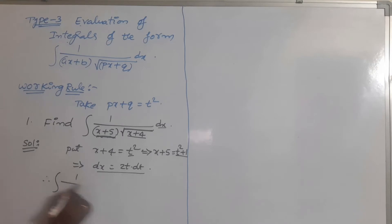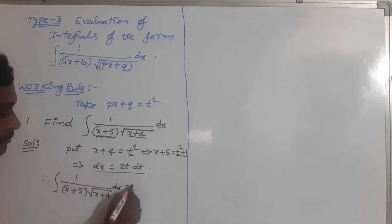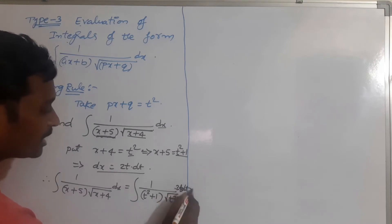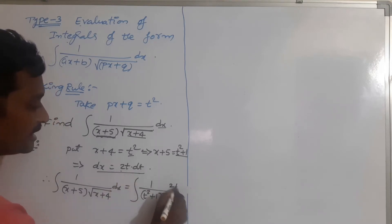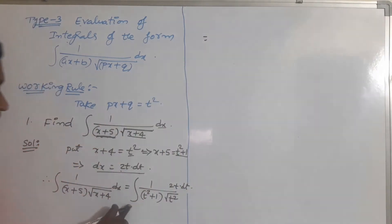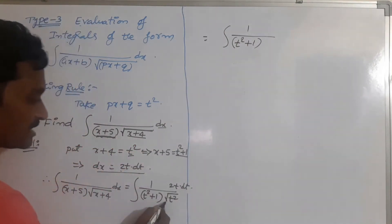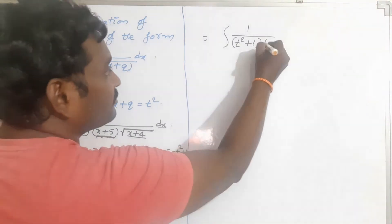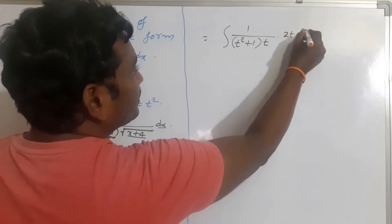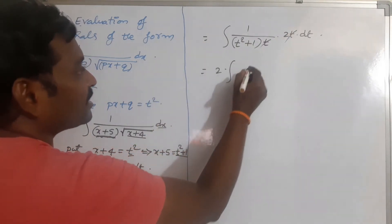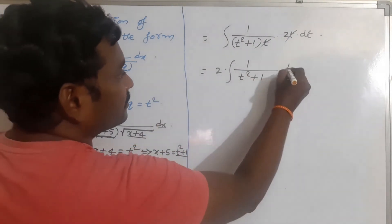The given problem becomes: integration of 1 by (x + 5) into root over (x + 4) into dx equals integration of 1 by (t squared + 1) into root over t squared into 2t dt. Because dx = 2t dt, root and square cancel giving t, then t and t cancel. So this becomes 2 times integration of 1 by (t squared + 1) dt.